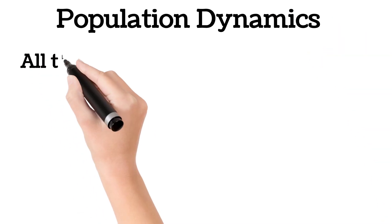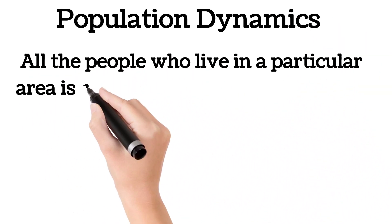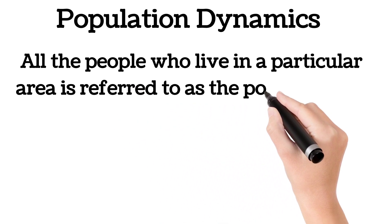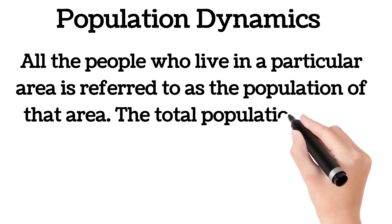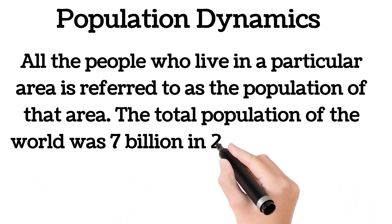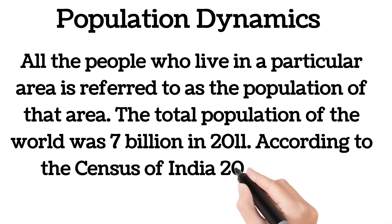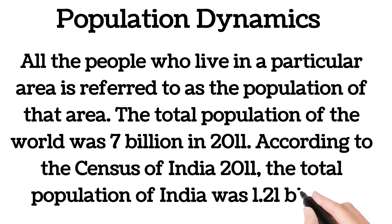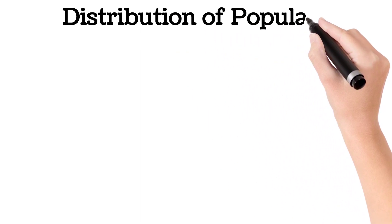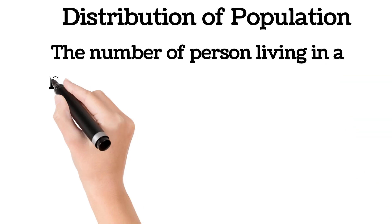Population Dynamics: all the people who live in a particular area is referred to as the population of that area. The total population of the world was seven billion in 2011. According to the census of India 2011, the total population of India was 1.21 billion.